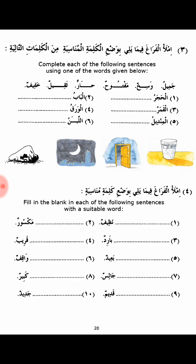The instruction says: complete each of the following sentences using one of the words given below. That's the first exercise — we have six sentences (جمل ستة). With these six words, we need to complete a khabar. The khabar is given above for the student to put in the right place to make a sentence.